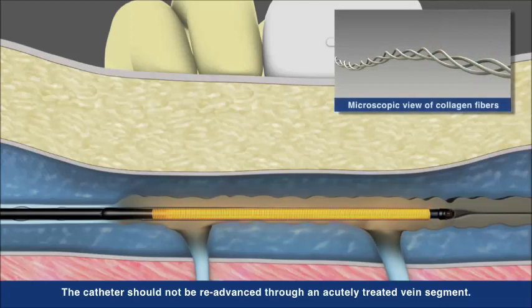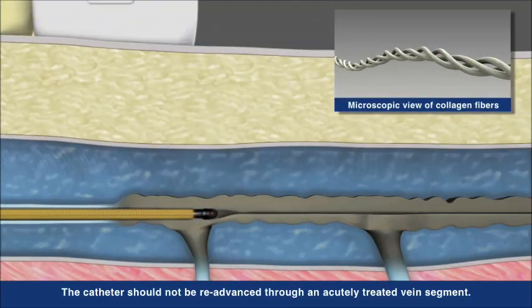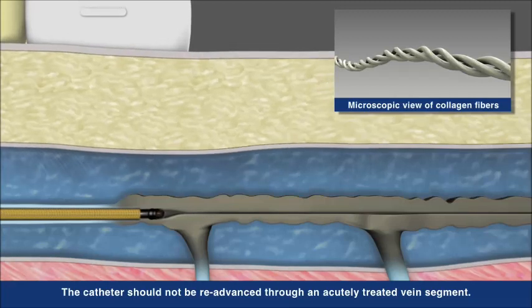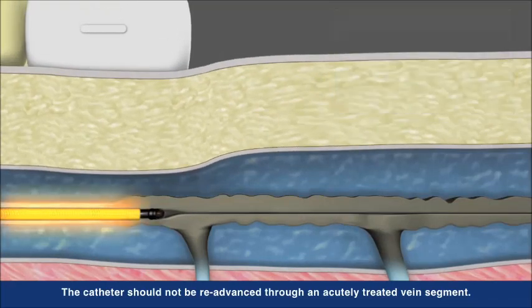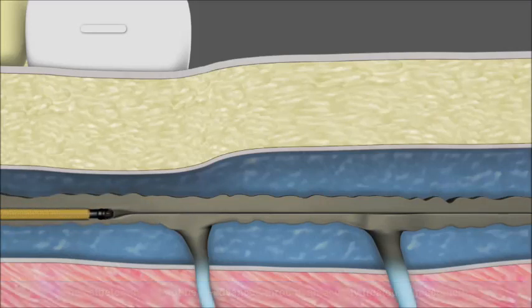The heat provided by the catheter shrinks and denatures the collagen and smooth muscle, resulting in the collapse of the target vein, creating a fibrotic seal and occluding the vessel. Blood flow is naturally redirected to healthy veins as the recovery process begins.